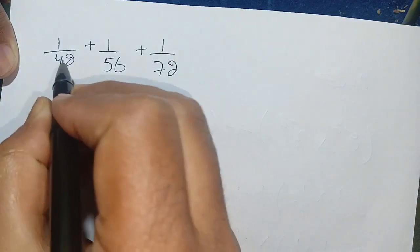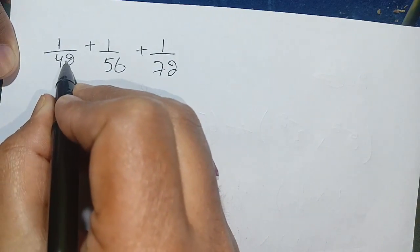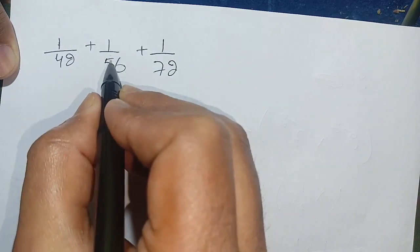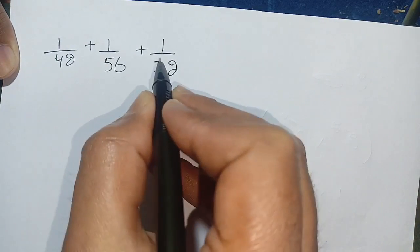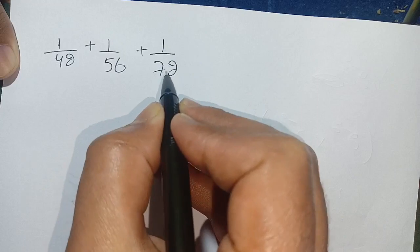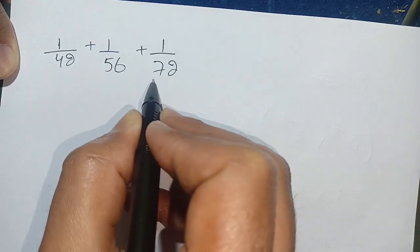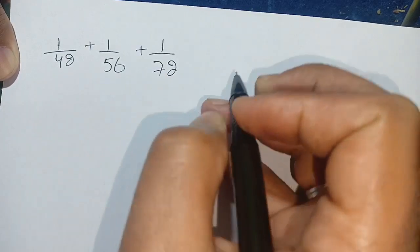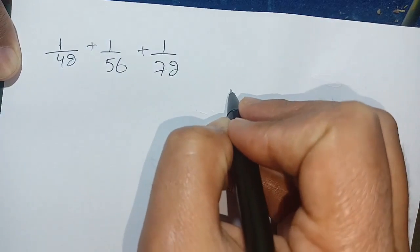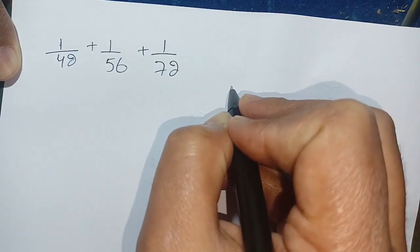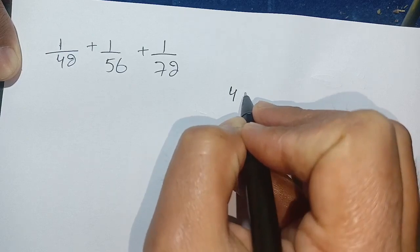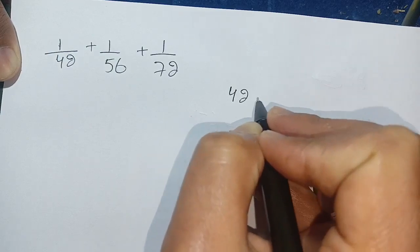Hello everyone. How to solve 1 divided by 42 plus 1 divided by 56 plus 1 divided by 72? How to add all these three terms? Let us solve this. We can write this as 42 can be written as the product of two consecutive numbers.